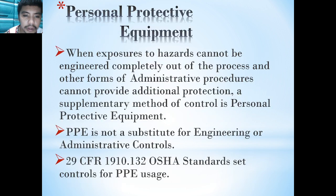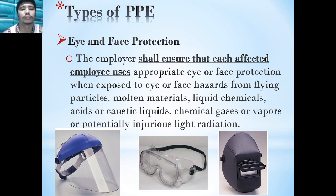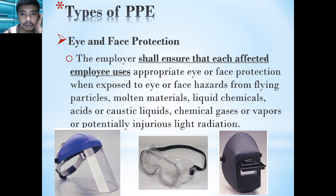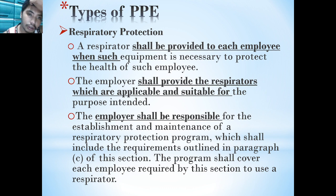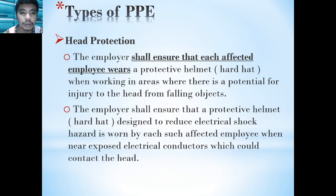Types of PPE: Eye and face protection — the employer should ensure each affected employee uses appropriate eye or face protection. Respiratory protection should be provided to each employee when such equipment is necessary to protect the health of the employee. Head protection — employers should ensure that each affected employee wears a protective helmet or hard hat.